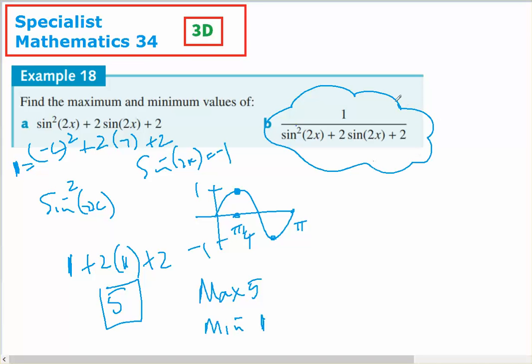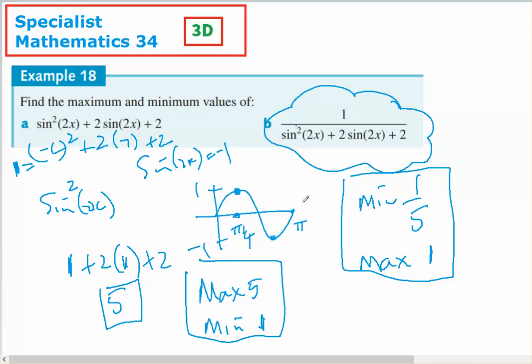Well, that maximum will become its minimum and that will be 1/5, and the minimum of 1, when it is inverted, will stay 1, so the minimum is 1/5 and the maximum is 1 for part b.